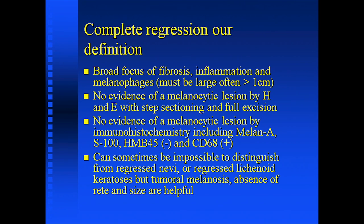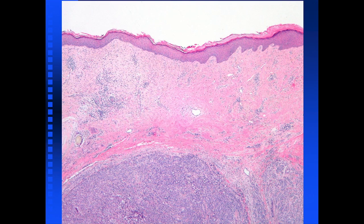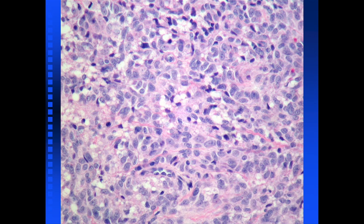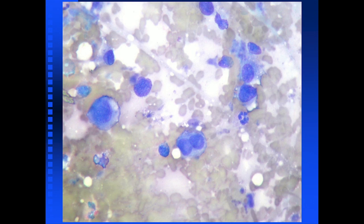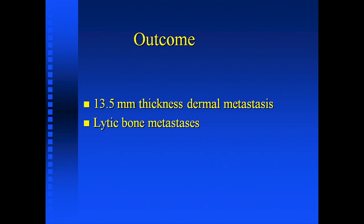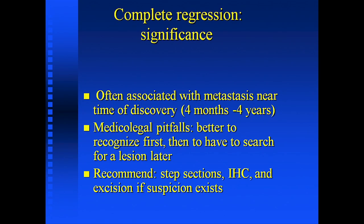I actually think it's not difficult in most cases — I think you can suggest it may be a regressed melanoma. If you see very abundant melanin — tumoral melanosis, sheets of melanophages coursing through the dermis and nothing else — that is almost always a regressed melanoma. So this is what happened in that patient. I said I thought it was a regressed lesion. The surgeon disagreed. But several months later, the patient presented with a huge dermal nodule composed of atypical epithelioid and spindle cells in a fascicular and alveolar pattern, and the bone marrow aspirate showed atypical epithelioid-like cells as well. The patient had a 13.5 mm thickness, dermal metastases, and lytic bone metastases.